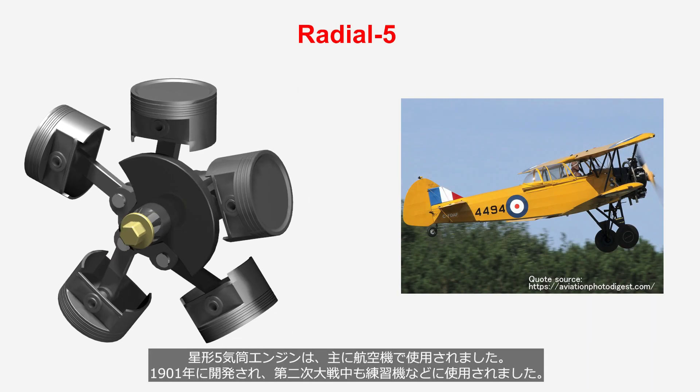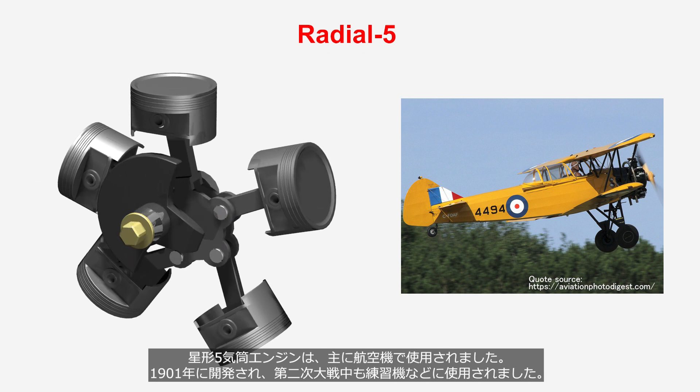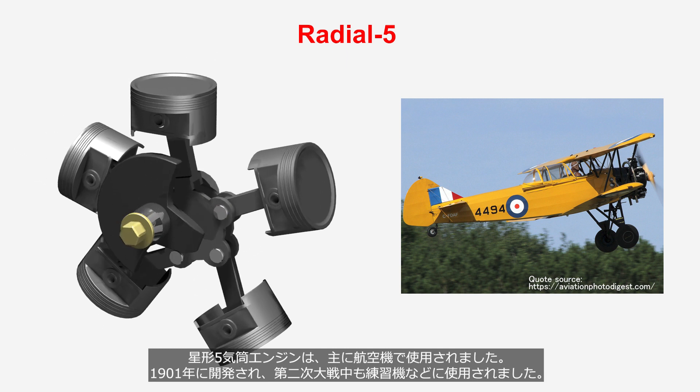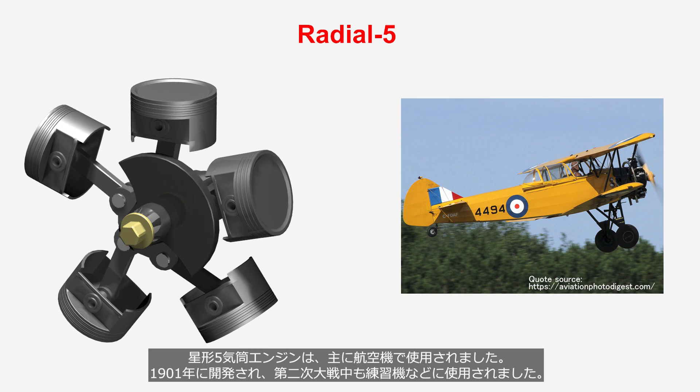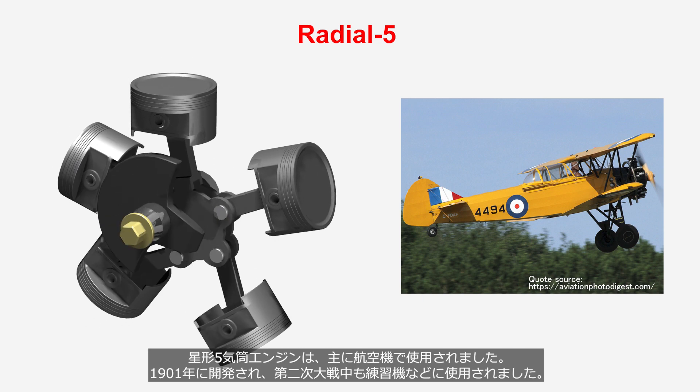Radial five-cylinder engines were primarily used in aircraft. It was developed in 1901 and continued to be used in training aircraft during World War II.